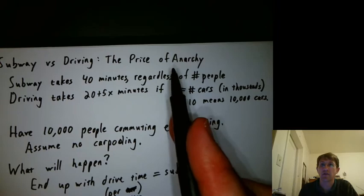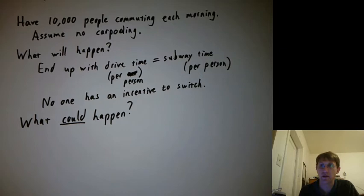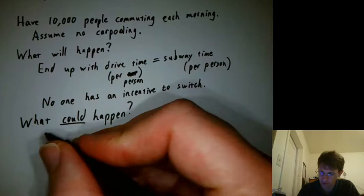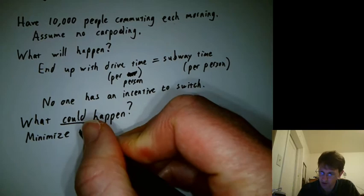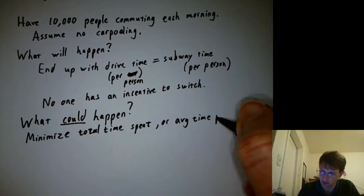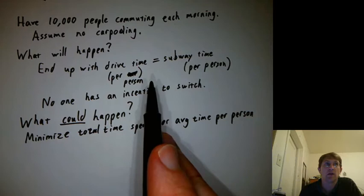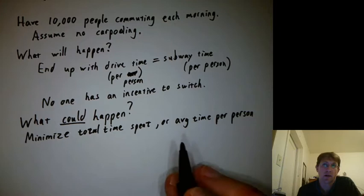If we got to plan everything, like right now it's anarchy. Everyone decides to do their own thing. But if we had central planning, and I'm sure there are no problems at all with central planning, we would want to minimize the total time spent by all the commuters, and that way we'd be saving some people some time. We want to minimize either the total time spent or the average time per person. Here everyone's spending 40 minutes. What if I could have the average be 38 minutes? Then I'd save, on average, two minutes per person.